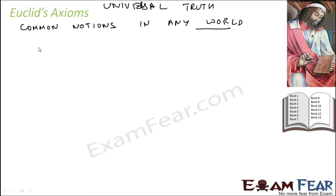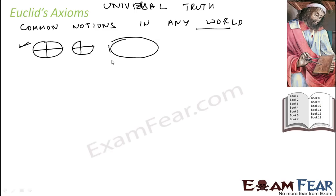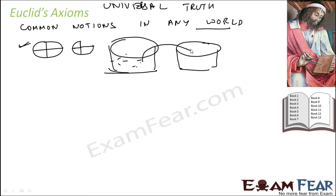For example, whole is greater than part. So if I have a big pizza and if I have just a part of this pizza, obviously the whole is bigger. Similarly, if I have a big bucket of water and I take out some water — a part of the water — the whole water will be bigger than the small part. The whole is greater than the part is a good example of an axiom.